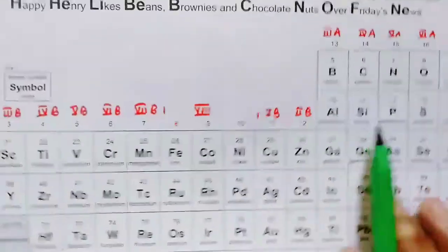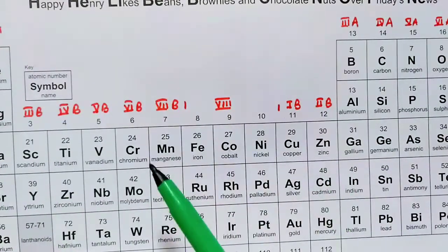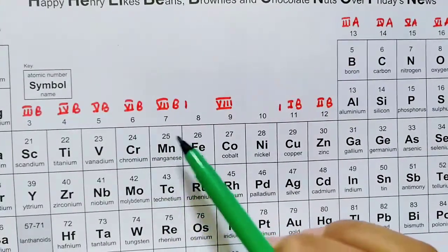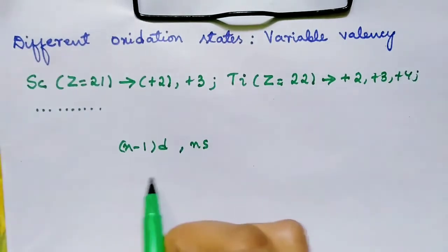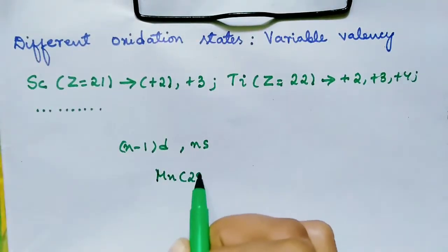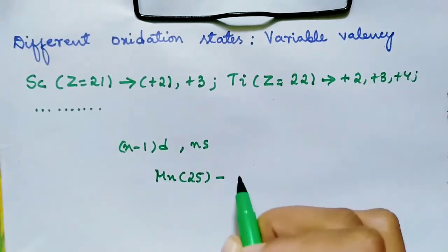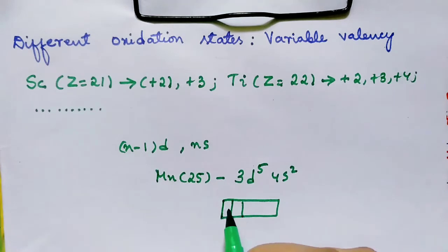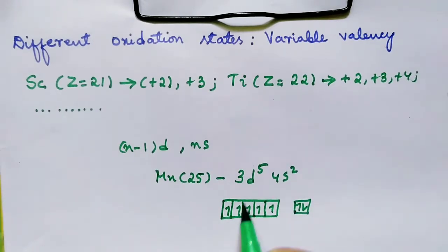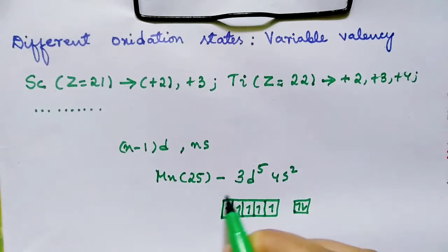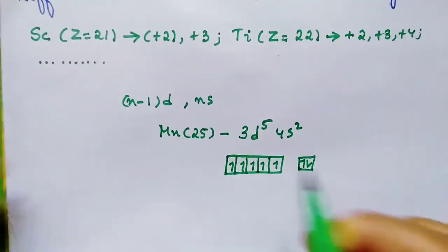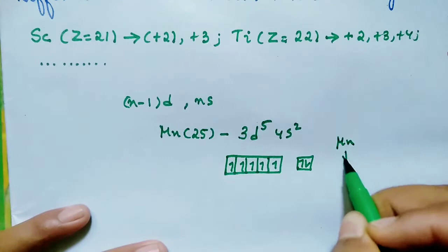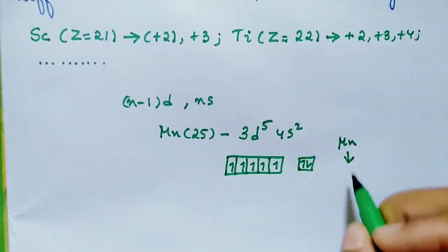Have a look at the 3d series elements from scandium to zinc. Manganese has the maximum number of unpaired electrons. The atomic number of manganese is 25. The valence shell electronic configuration for manganese is 3d⁵, 4s². Here we have 5 unpaired electrons in 3d⁵ and 2 electrons in 4s². In the 3d series, manganese has the maximum number of unpaired electrons.